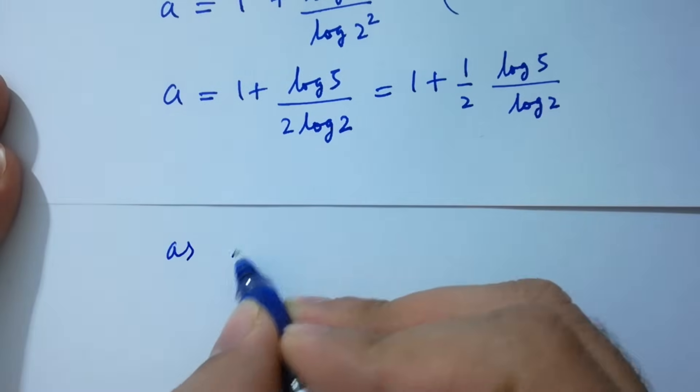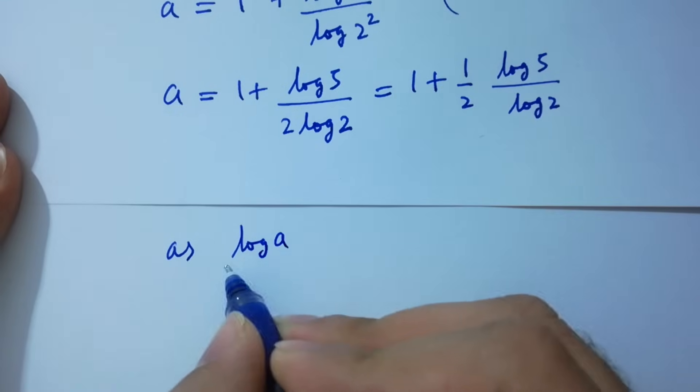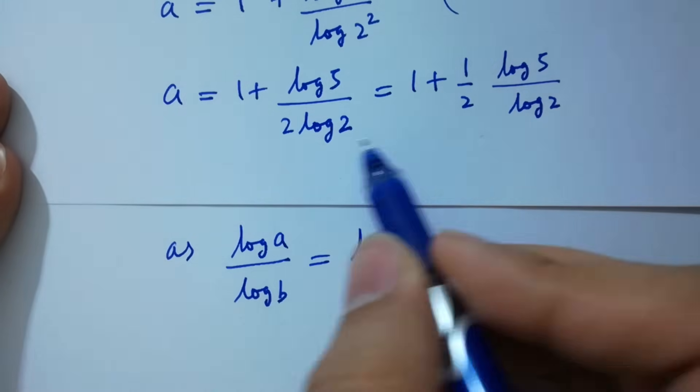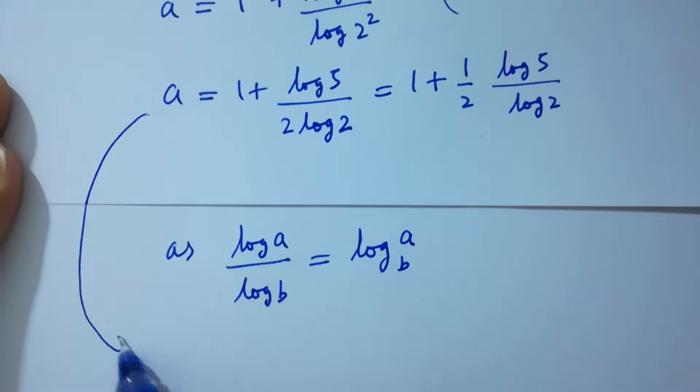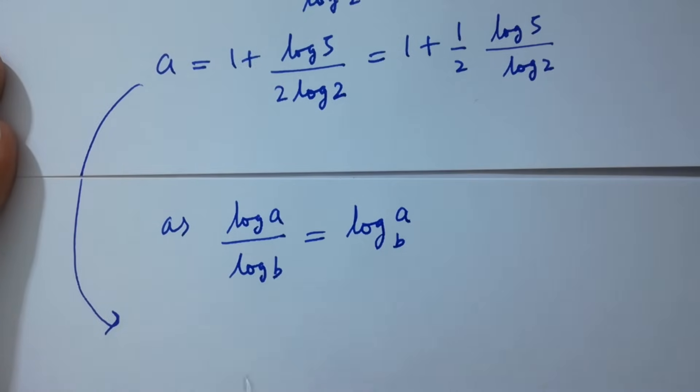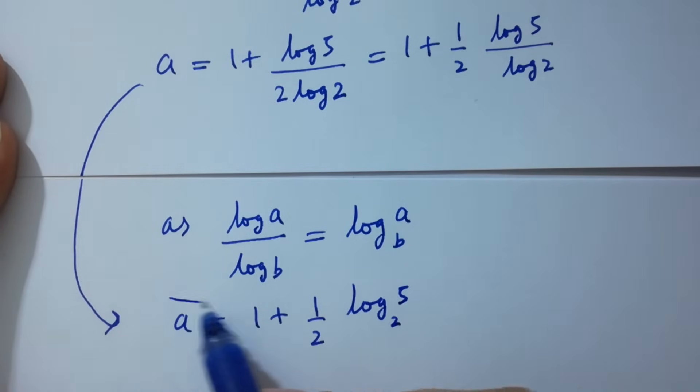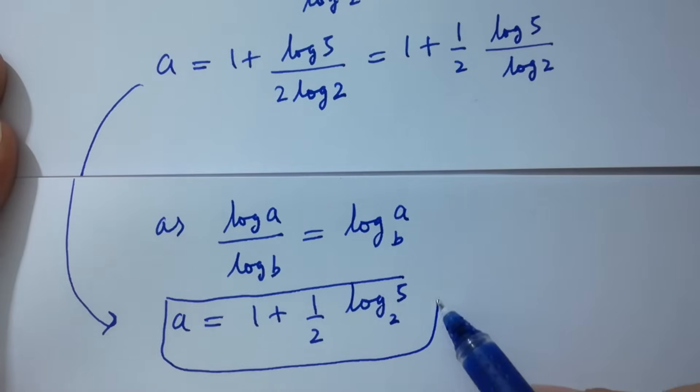As log A over log B equals log A to the base B, A will be equal to 1 plus half log 5 to the base 2, which is the value of A.